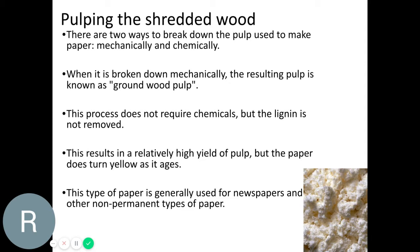The pulp turns yellow because that lignin has not been removed. So this type of paper — where we get a large yield but it yellows over time — is low quality paper, used for newspapers and non-permanent types of paper. You wouldn't use mechanically ground pulp for high quality paper used by artists, photographers, or in advertising, because it would yellow over time.